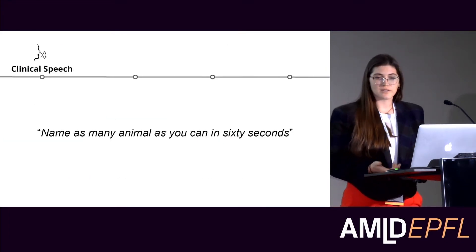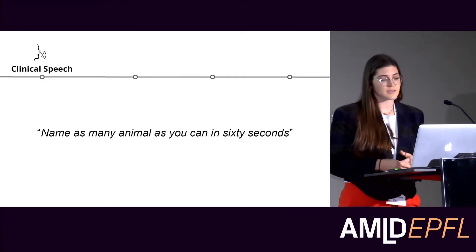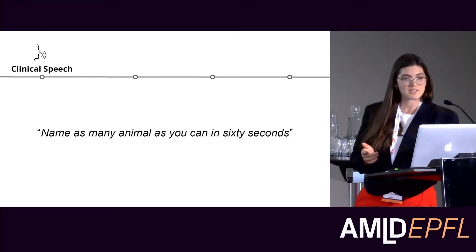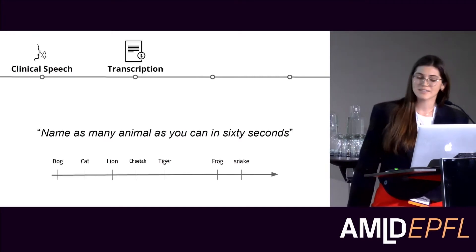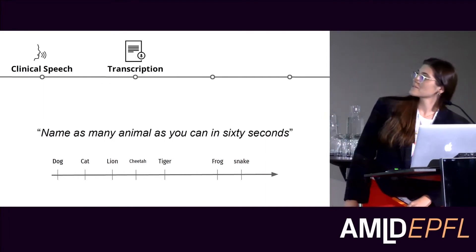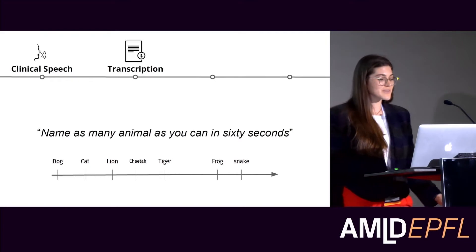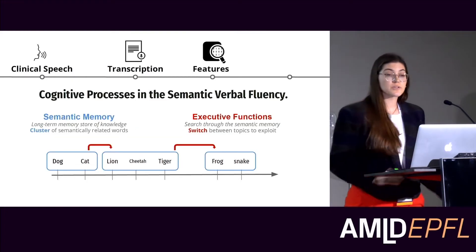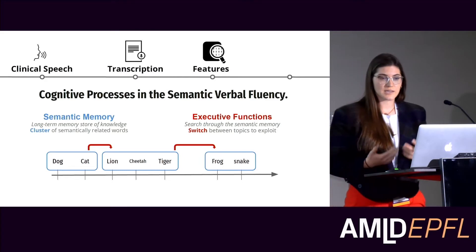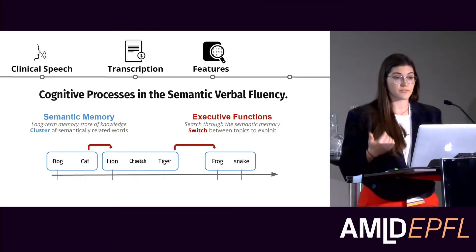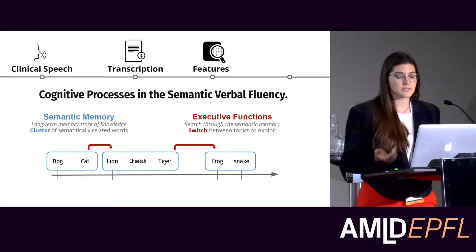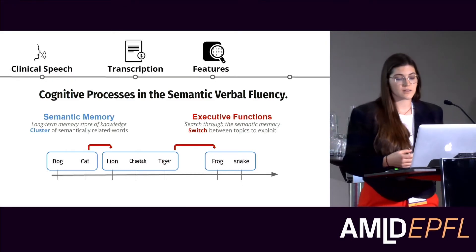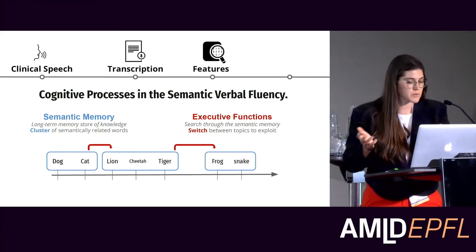When we start with clinical speech we usually look at a task. This is the semantic verbal fluency task, near and dear to my heart, and it goes something along the lines of: name as many animals as you can in 60 seconds. It would look something like this — people would say something like dog, cat, lion. You get one minute for the task. People would say dog, cat, lion, cheetah, tiger, frog, snake. You can see dog and cat are maybe pets — a cluster. Lion, cheetah, tiger are big cats.